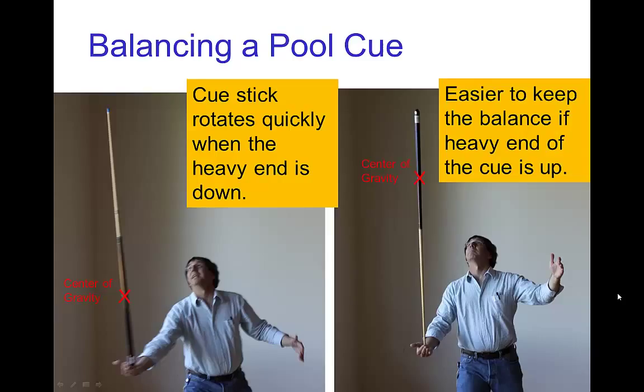If you want to balance an object like a pool cue on the palm of your hand, it's much easier if you have it with the heavy end up compared to the heavy end down. You might be surprised, but if you have something that is top heavy, being top heavy, the rotational inertia is larger and so it rotates more slowly.